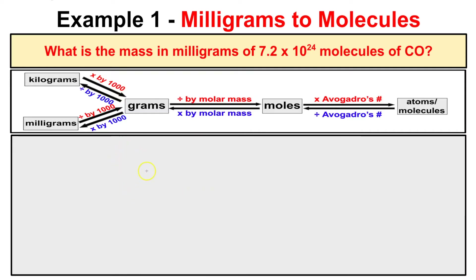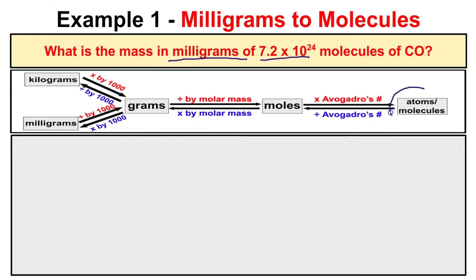Let's take a look at this very first example. It says: what is the mass in milligrams of 7.2 times 10 to the 24th molecules of carbon monoxide? So we want to know the mass in milligrams of this many molecules of carbon monoxide. We are given the number of molecules of carbon monoxide, and we want to figure out how many milligrams that is.